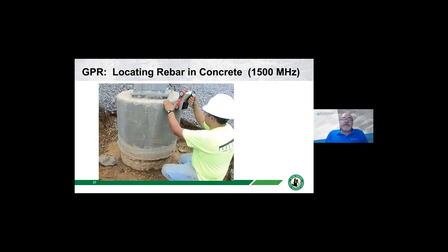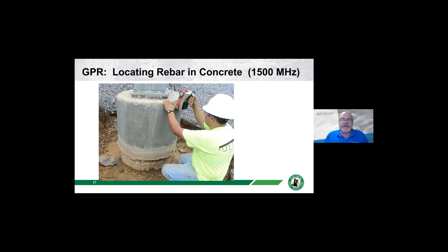The key takeaway is that there are different frequency antennas available. In this picture, the technician is locating transverse rebar around the perimeter of a pier foundation by going across the transverse steel with vertical data lines of GPR. If he were looking for longitudinal steel, he would collect data around the perimeter. This is a handheld mini at 1,500 megahertz—a self-contained unit about the size of an iron that doesn't need to be connected to any additional computers.